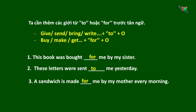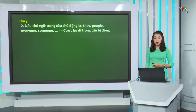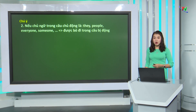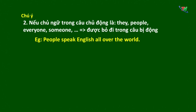Tiếp theo, chú ý thứ 2: nếu chủ ngữ trong câu chủ động là 'they', 'people', 'everyone', 'someone', thì chúng ta có thể bỏ đi trong câu bị động. Ví dụ: 'People speak English all over the world.' Chủ ngữ là 'people', nên chúng ta có thể bỏ đi trong câu bị động. Câu bị động: 'English is spoken all over the world.'